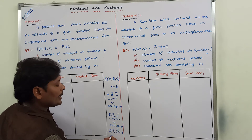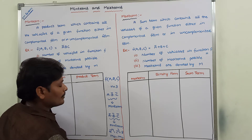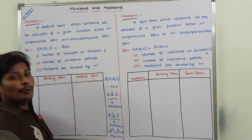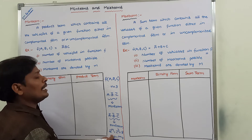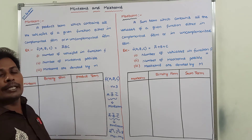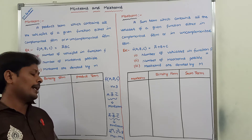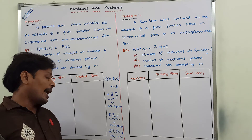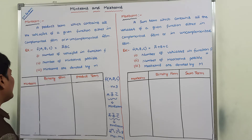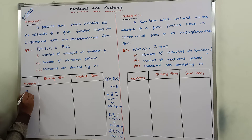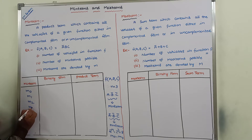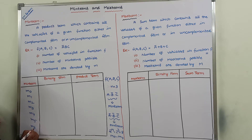8 min terms are denoted by m0 to m7, where small m is used for denoting the min terms. When n equals 3, the 8 min terms are m0, m1, m2, m3, m4, m5, m6, and m7. Suppose n equals 4, then 2 power 4 equals 16 min terms, from m0 to m15. In the suffix of m, the integer can be represented in binary form with 3 bits because n is equal to 3.